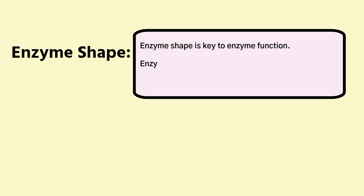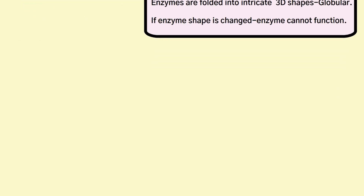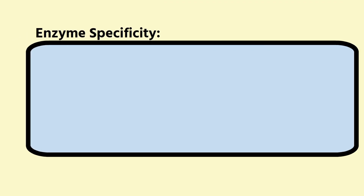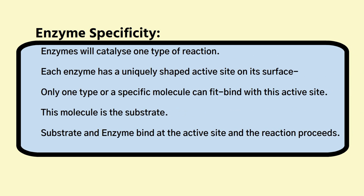Enzymes are proteins, and proteins are all about shapes — they're folded into particular shapes. An enzyme's shape is very important to its function. Enzymes are folded into intricate three-dimensional shapes described as globular, and if the shape has changed, the enzyme cannot function. What is meant by enzyme specificity? Enzymes will catalyse only one type of reaction, and this is all down to the active site — this uniquely shaped active site on the surface of the enzyme.